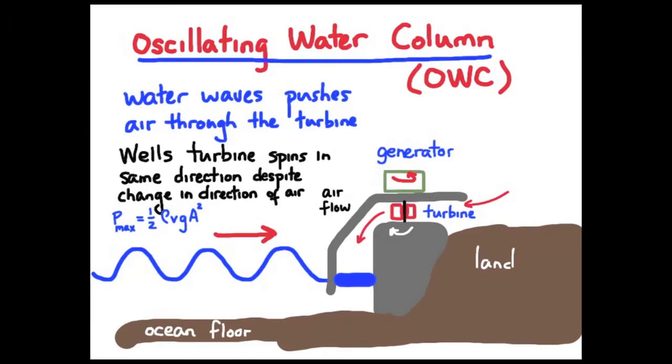So the power in that wave, again, is one-half rho VGA squared. And essentially, that is the power that you're delivering to the air, forcing it through the turbine. Of course, you're not going to have 100% efficiency, you might get 40% or 50%.